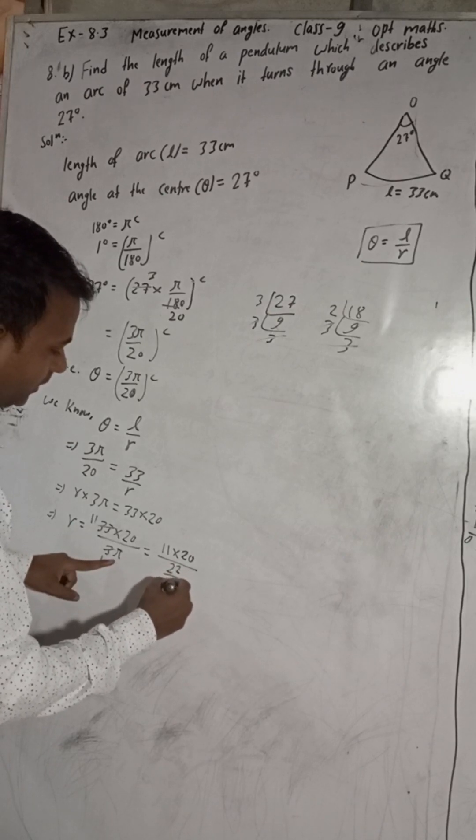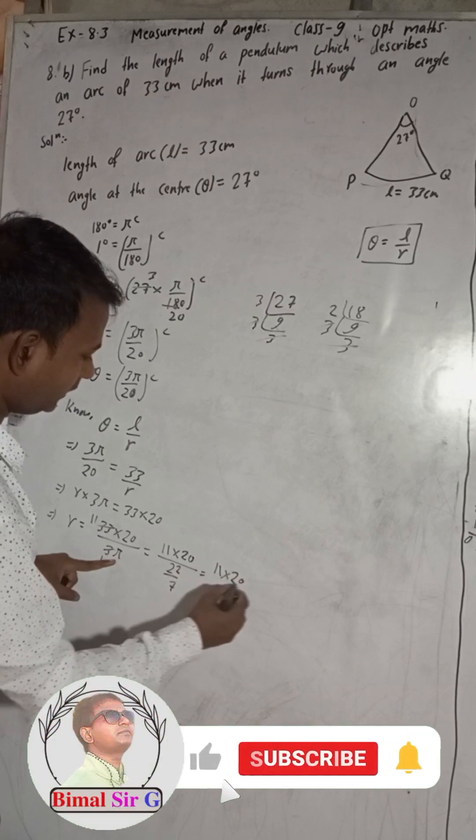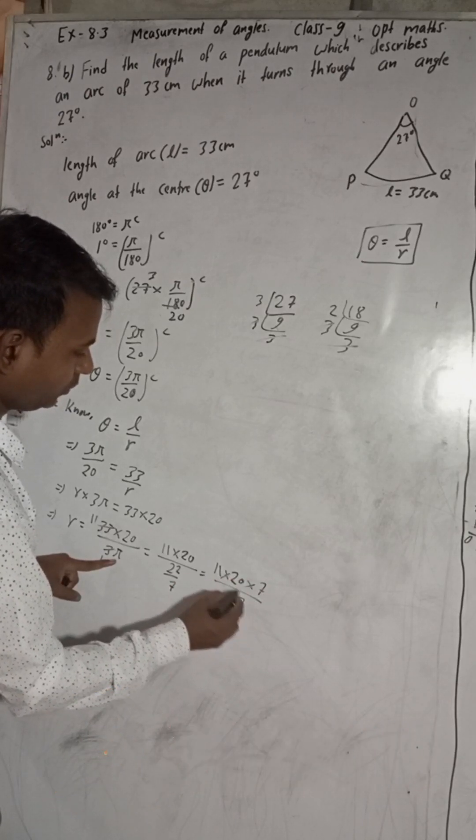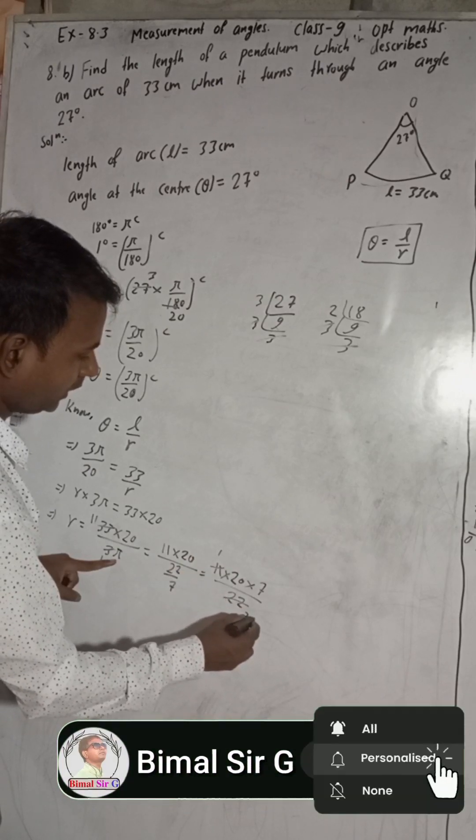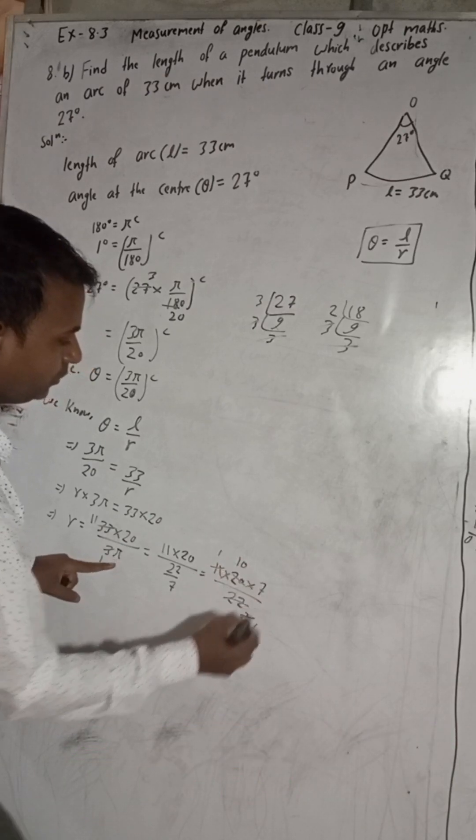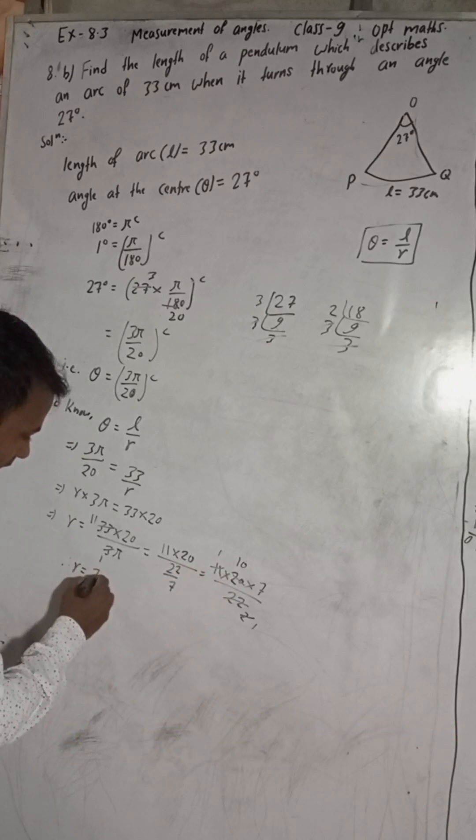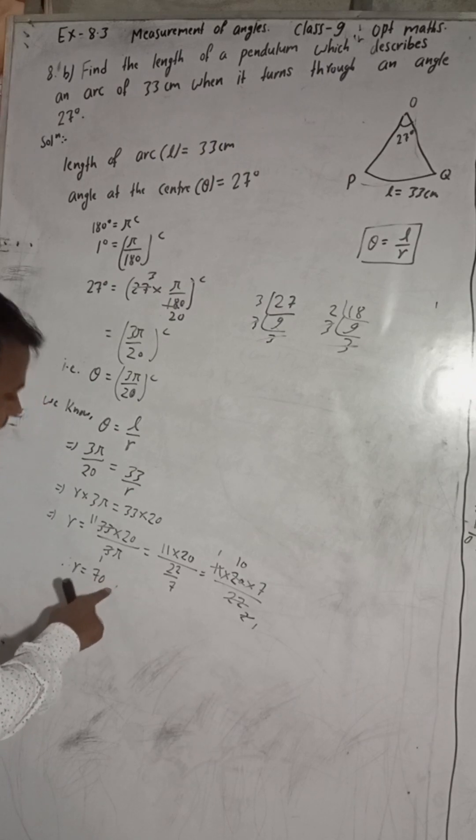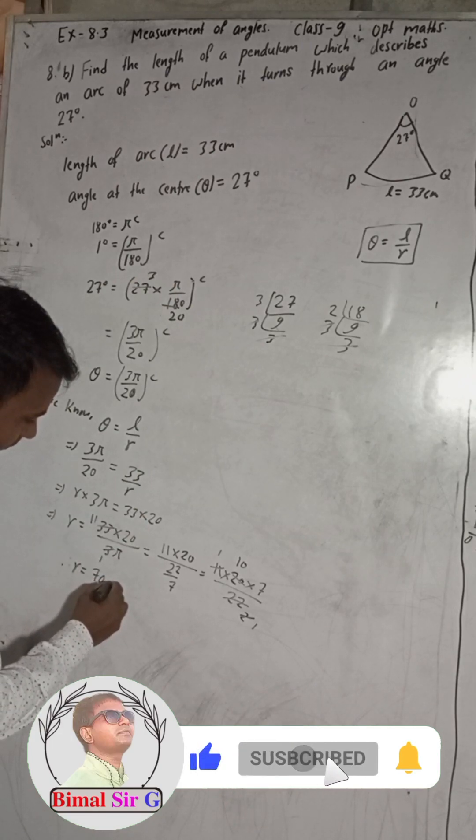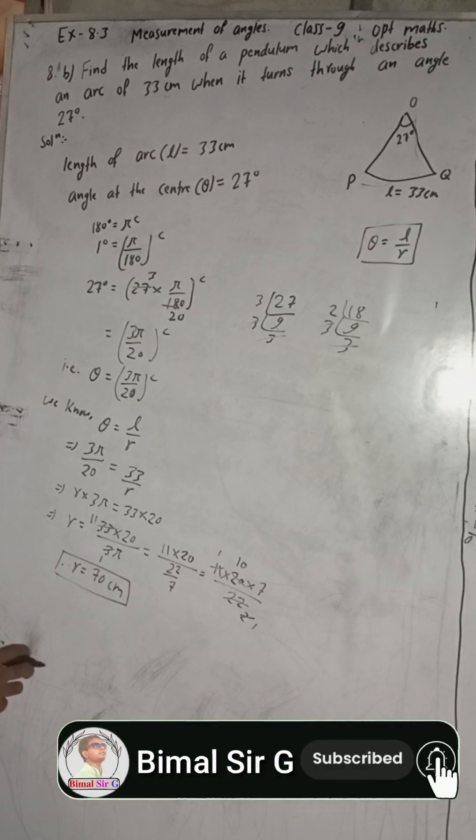Pi value is 22 by 7. So this is 11 into 20 and this 7 will go up, and there is now 22. So 11 is 11, 11 to 22, and 2 times are 2. And this is 2 times 20, so that is 10 into 7. Therefore R is equal to 70. This is centimeter, so this will also be in centimeter.